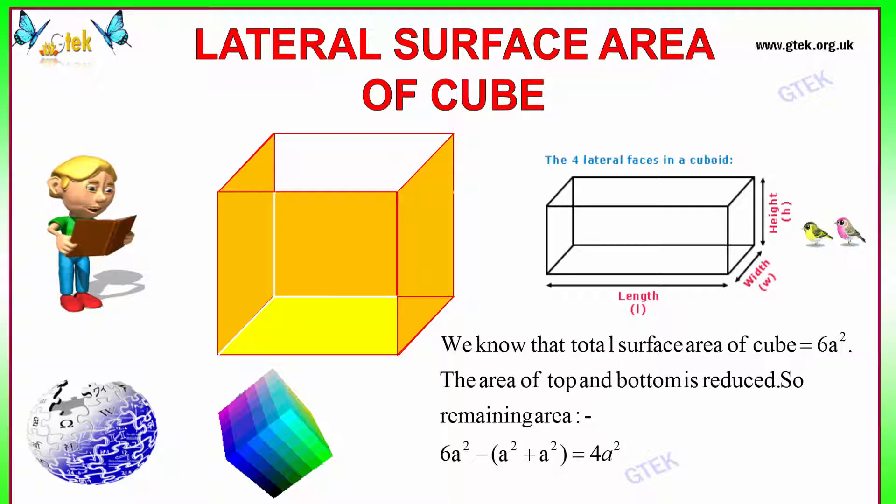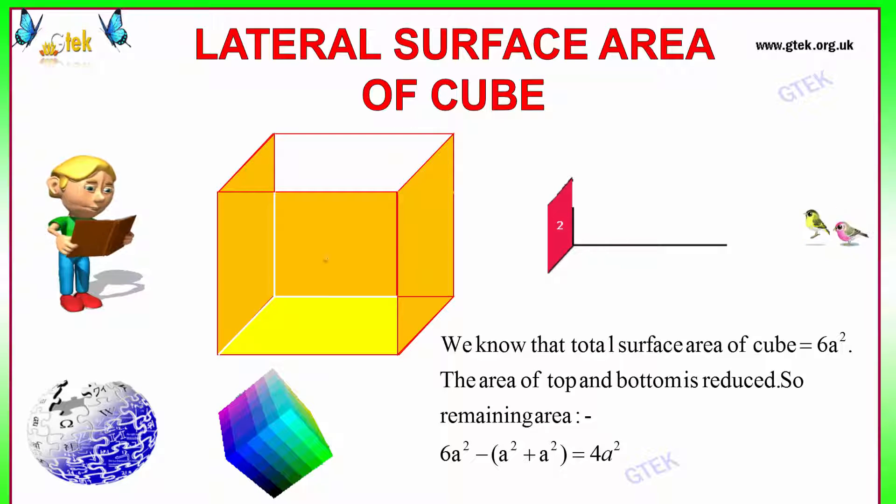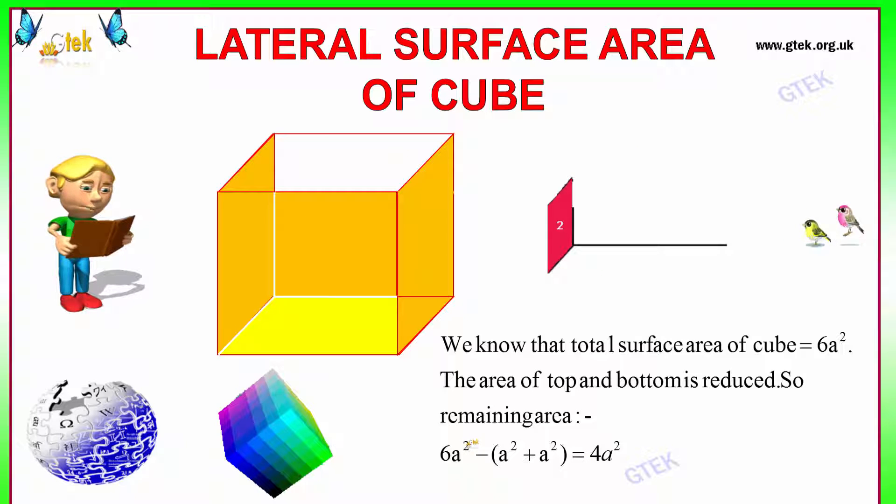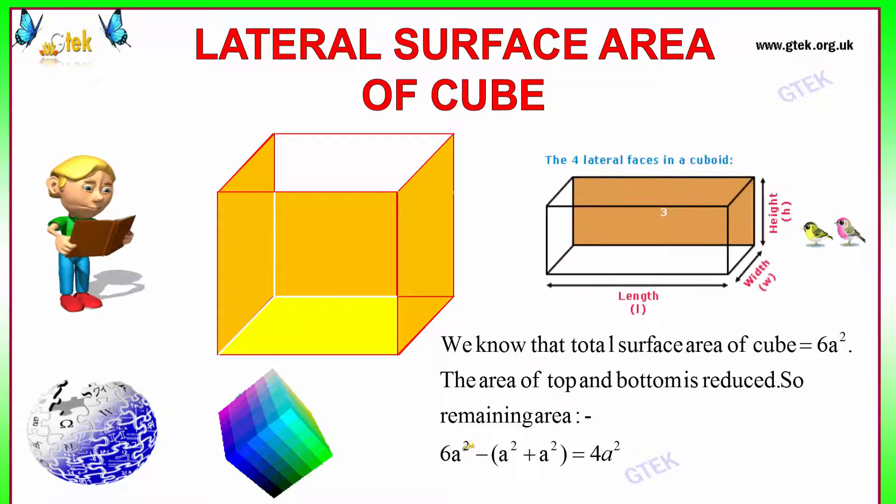Now we'll see the lateral surface area of the cube. Lateral surface area of the cube is we need to remove the side end 2 sides. We know the total surface area of the cube is 6A square. The area of top and bottom is reduced, so the remaining area is 4A square. In 6A square, 2A square is gone, so we got 4A square. That's referred to as lateral surface area of the cube.